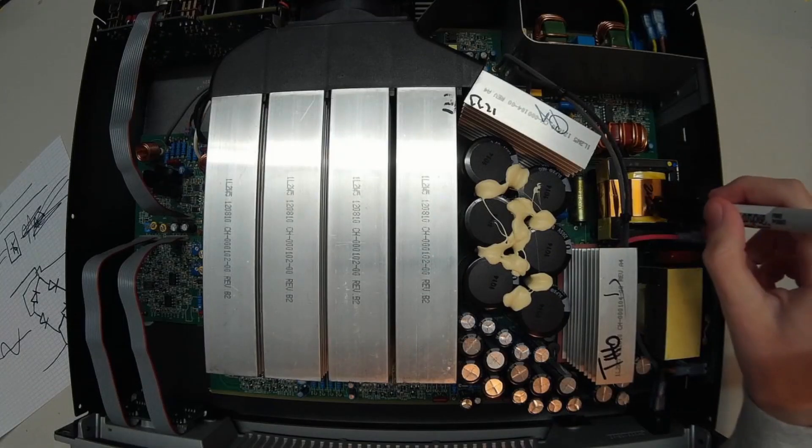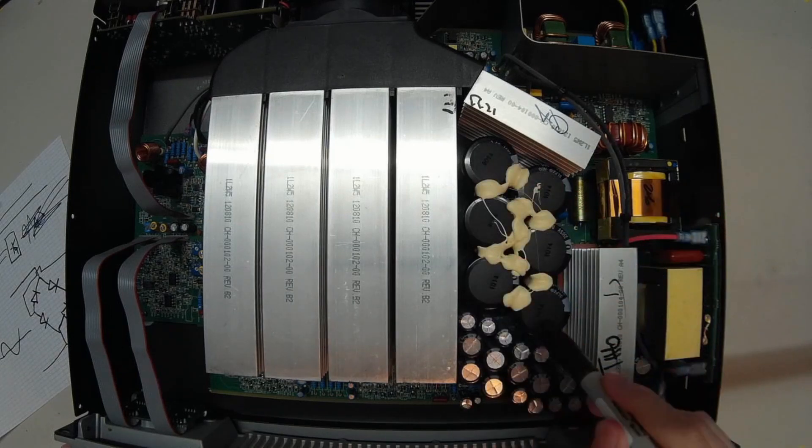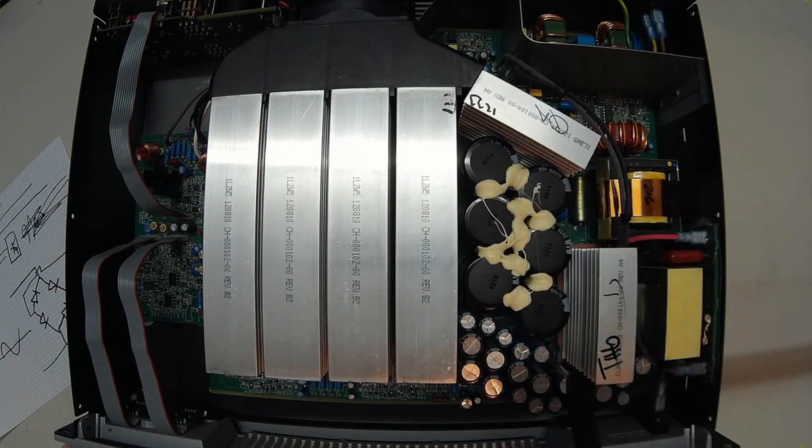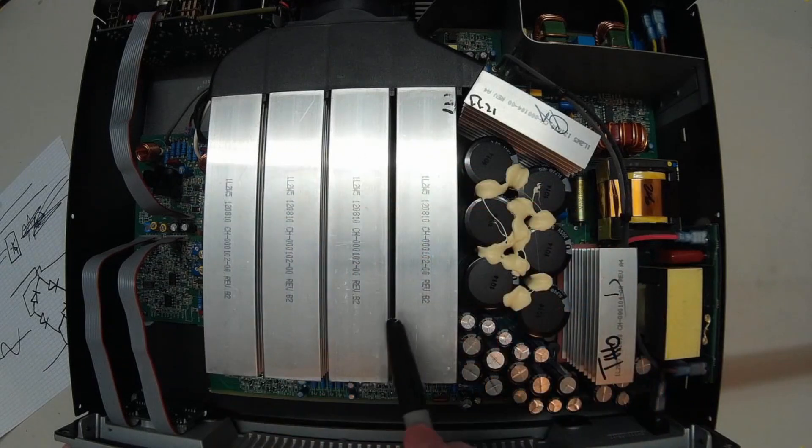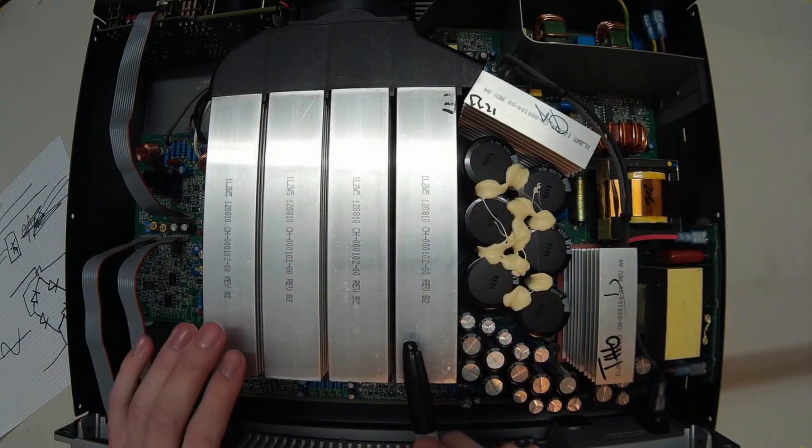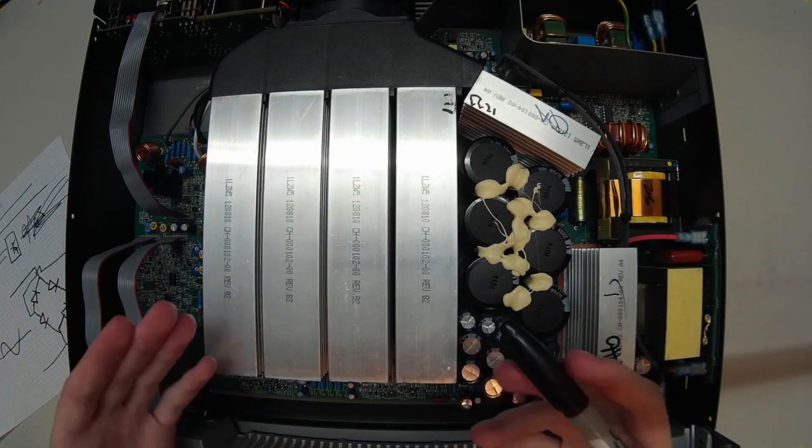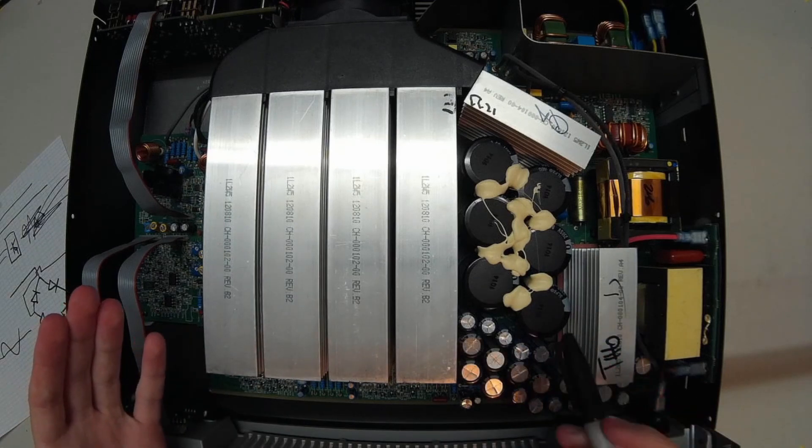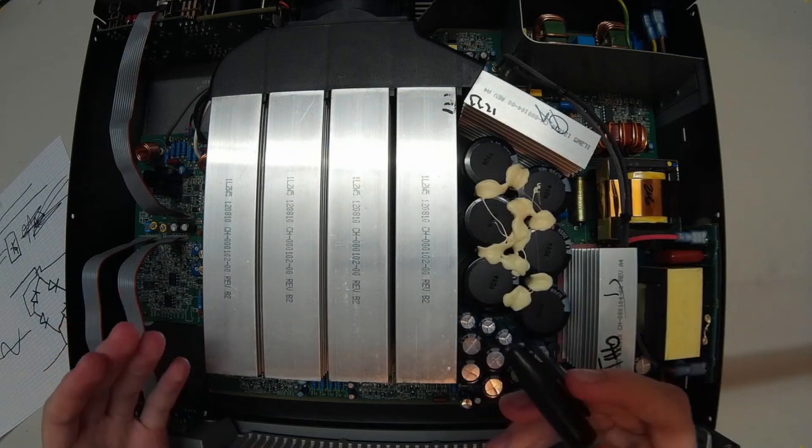The output of this transformer gets rectified again and it gets stored in this capacitor bank. As you can see, this is a large capacitor bank because this is what actually powers these transistors. So this way these transistors can modulate the output to get the music signal.